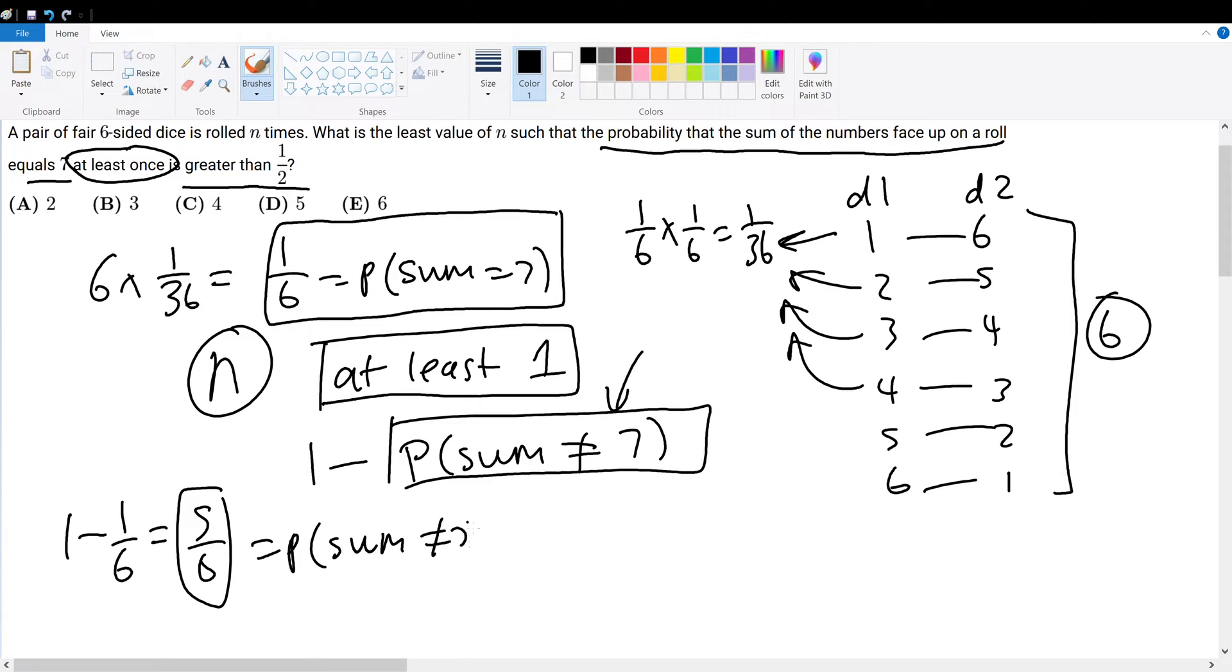So 1 minus 5/6 would be the case for one roll, which equals 1/6. But we're rolling n times, so after n rolls we have (5/6)^n possibilities. Since this cannot exceed 1, subtracting this term from 1 gives the probability that it's greater than 1/2.